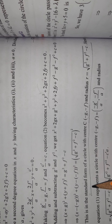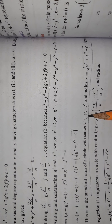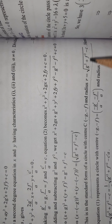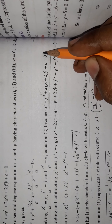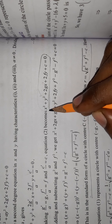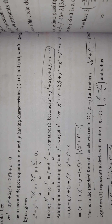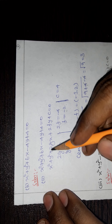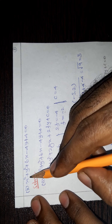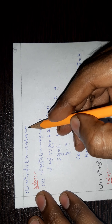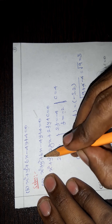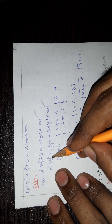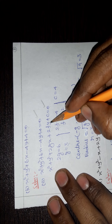For the second substitution, we use the standard form: center = (minus g, minus f) and radius = square root of g² + f² minus c. This is the general form of the equation of a circle. Second equation: x² + y² + 6x minus 4y + 4 = 0. The given equation is x² + y² + 6x minus 4y + 4 = 0.